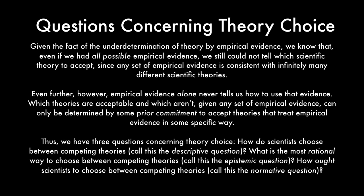First, how do scientists choose between competing theories? Call this the descriptive question, since it's interested in what in fact occurs in scientific practice. Second, what is the most rational way to choose between competing theories? Call this the epistemic question, in that it's interested in which epistemic standards are relevant to theory choice. Finally, how ought scientists to choose between competing theories? Call this the normative question, in that it's concerned with best practices — what ought to be the case.